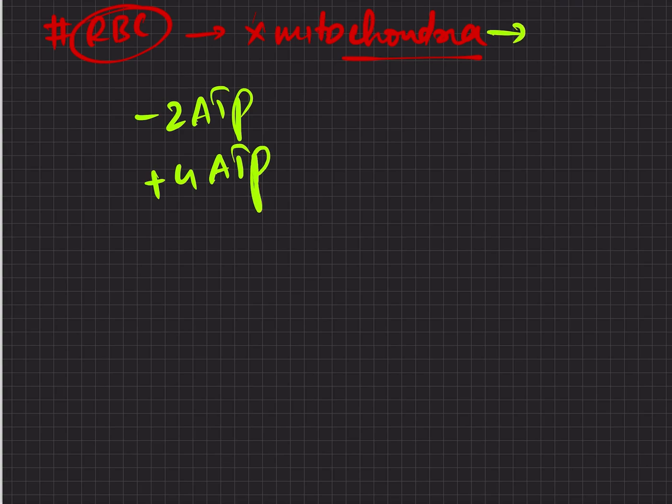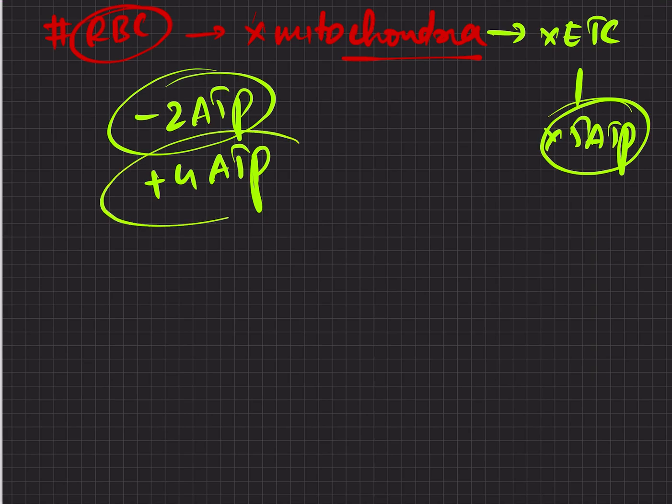Here what happens is minus 2 ATP, plus 4 ATP. As there is no mitochondria, there will be no ETC and no 5 ATP produced. So even in aerobic or anaerobic conditions, the number of ATP produced will always be 2.